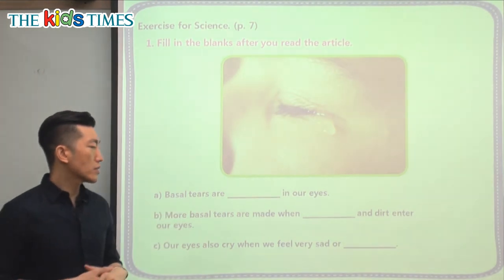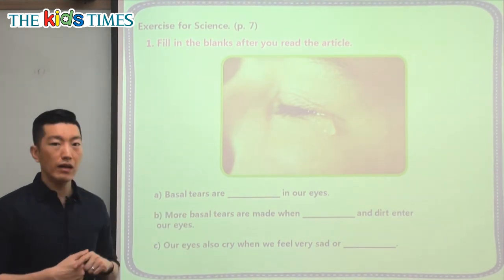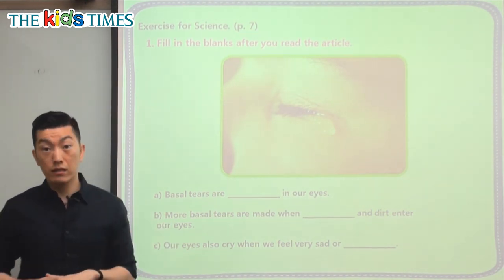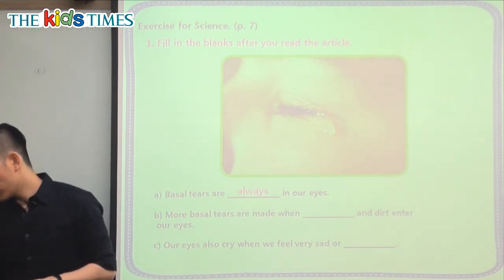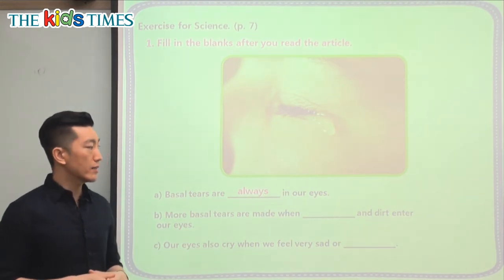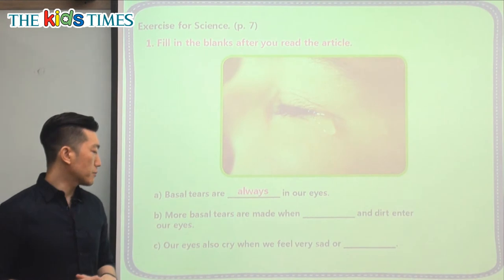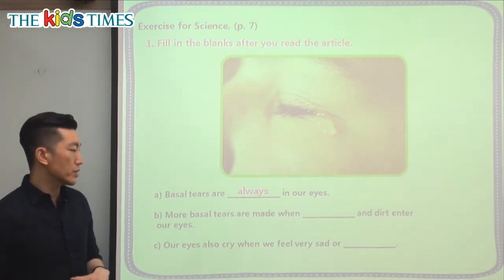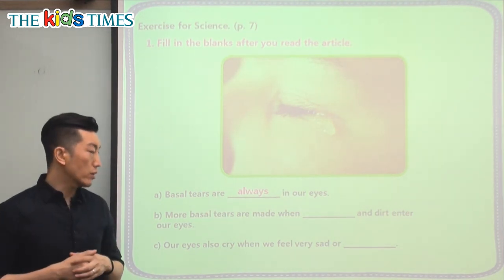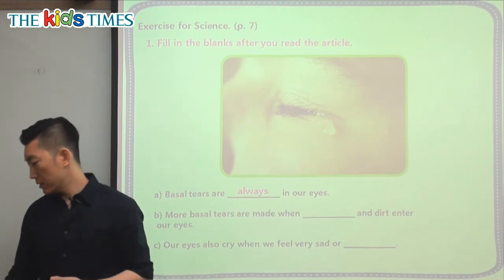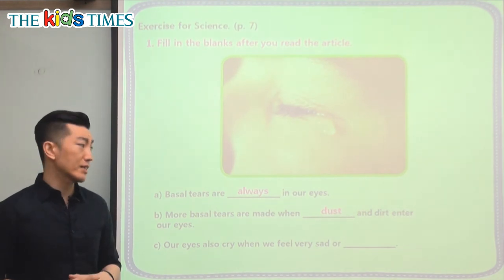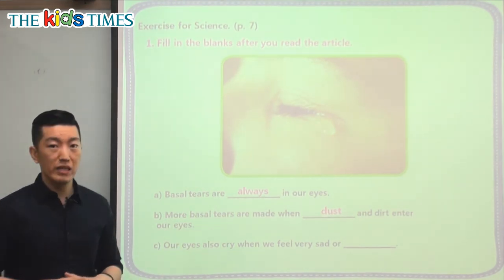Basal tears are always in our eyes. Without basal tears, it would be very difficult for us to use our eyes correctly. More basal tears are made when dirt and dust enter our eyes. If you get dust in your eyes — especially around the time when there's a lot of yellow dust — that's when you'll see more basal tears.